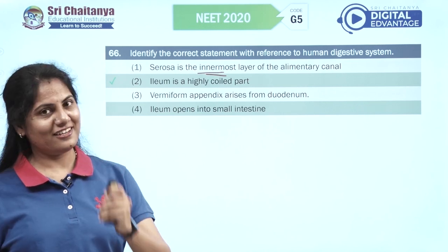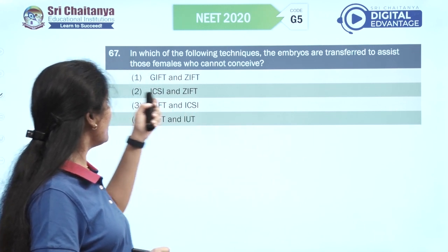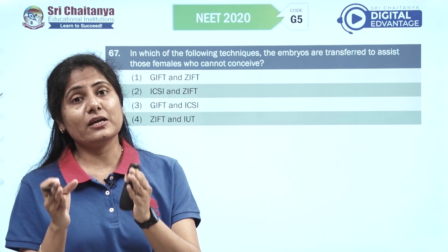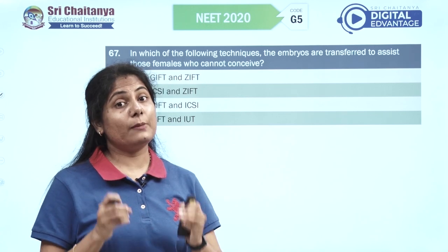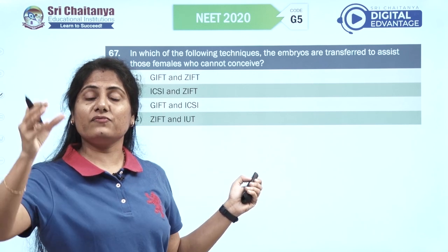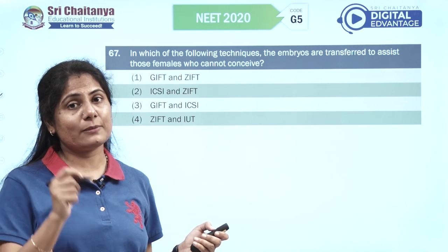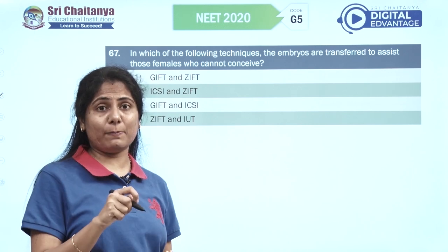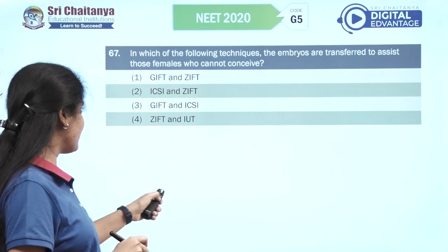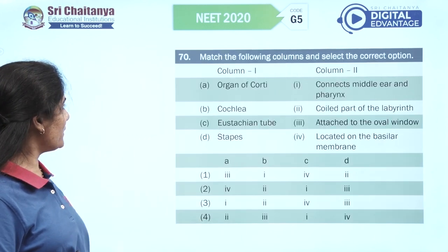In which technique are embryos transferred to assist females who cannot conceive? ZIFT — zygote intra-fallopian transfer — we transfer the zygote to fallopian tubes if it has fewer than 8 blastomeres. If it has more than 8 blastomeres, we transfer it to the uterus, which is intrauterine transfer. The fourth option is the right option.